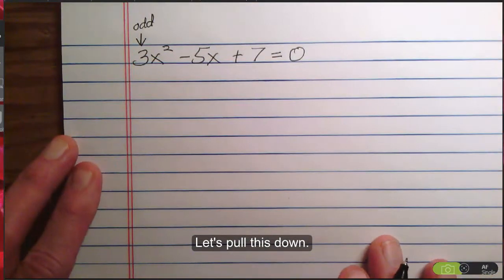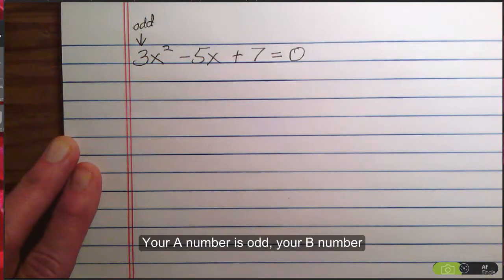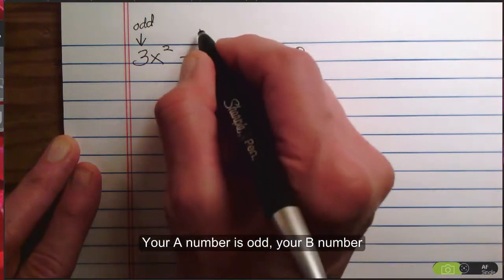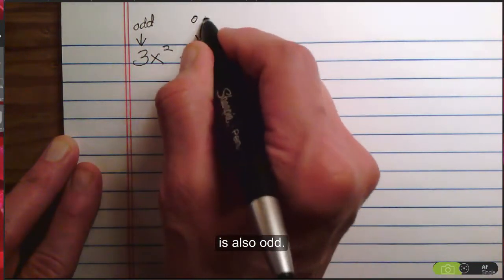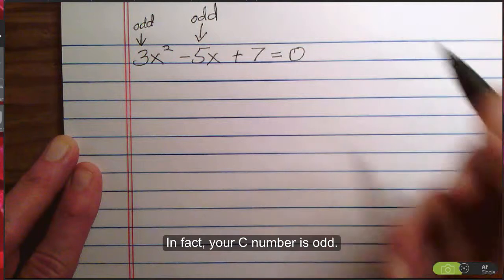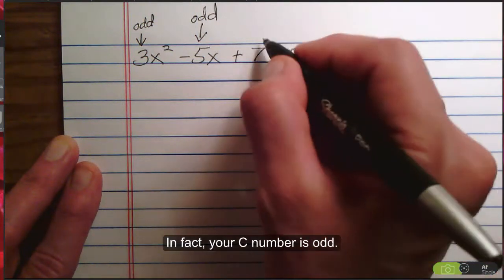There, let's write that down there. Your A number is odd. Your B number is also odd. And, in fact, your C number is odd.